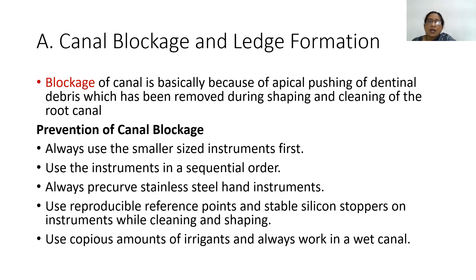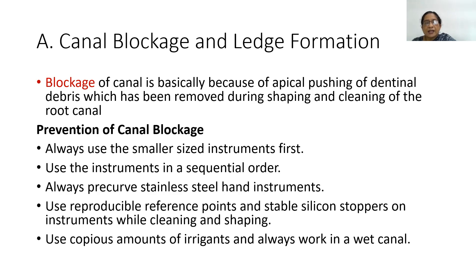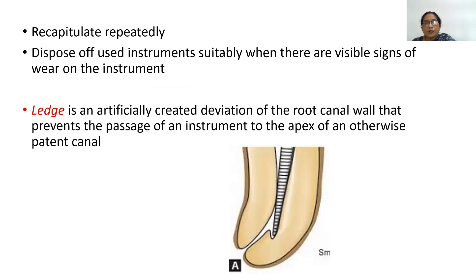Canal blockage occurs due to apical pushing of dentinal debris removed during shaping and cleaning. To prevent canal blockage: always use the smaller-sized instrument first and use instruments in sequential order. Always pre-curve stainless steel hand instruments. Use reproducible reference points and stable silicone stoppers. Use copious amounts of irrigants and always work in a wet canal. Recapitulate repeatedly — this is a very important step. Dispose of used instruments when there are visible signs of wear.